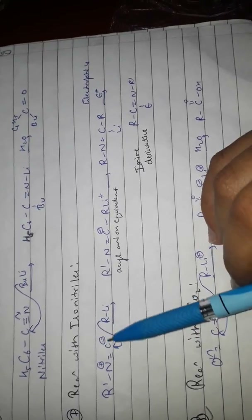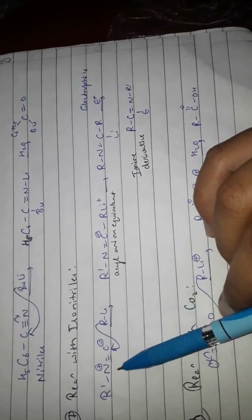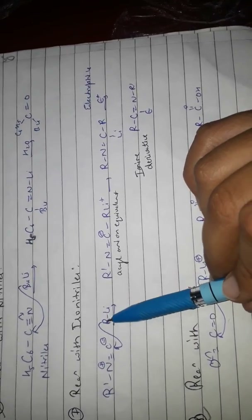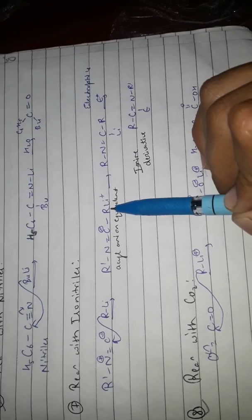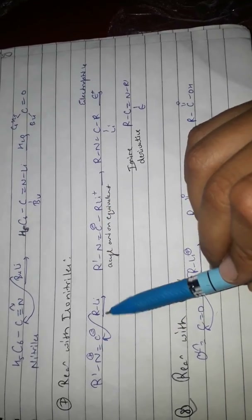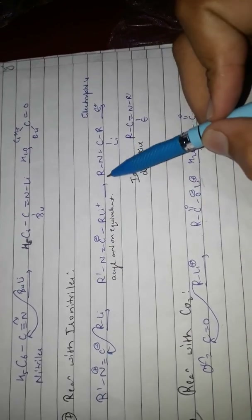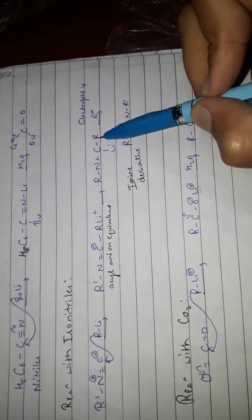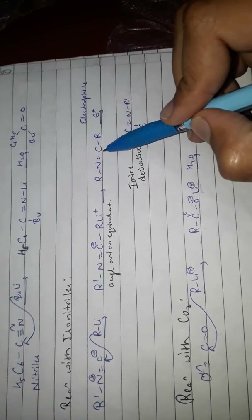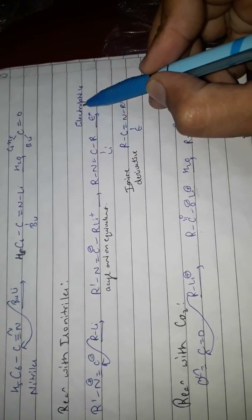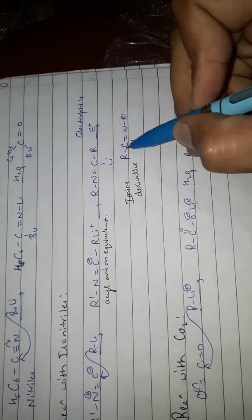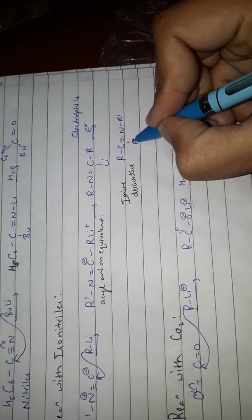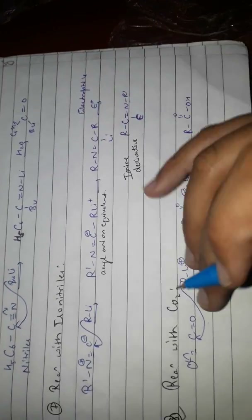Reaction with isonitrile: butyl lithium reacts with isonitrile (RNC). There is attachment of RLi onto the isonitrile carbon, followed by a shift of lithium onto that carbon atom via electrophilic substitution. The product is an imine derivative (R–C=NR).